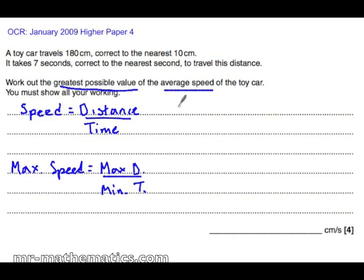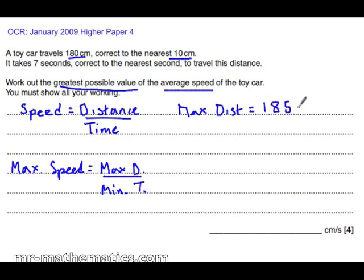The upper bound of the distance: when 180 has been rounded correct to the nearest 10, the maximum distance would be 185cm. Any more and it would become 190.